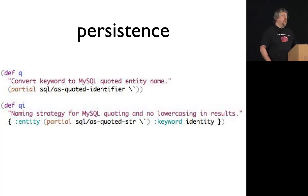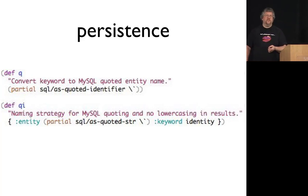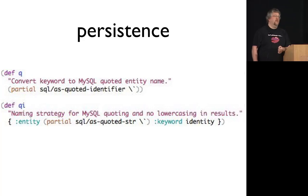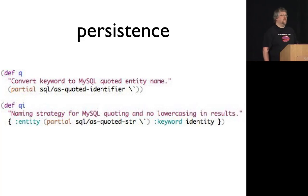The naming strategies convert keywords to SQL entities — for MySQL we have back-quotes around things, and we have column names that are keywords in SQL. The default behavior of java.jdbc is to lowercase all column names as they come back into your code as keywords, which is sometimes not very convenient. You can specify a naming strategy to prevent that, so when you get keywords back they are the identity of the column name, giving us mixed-case keywords.